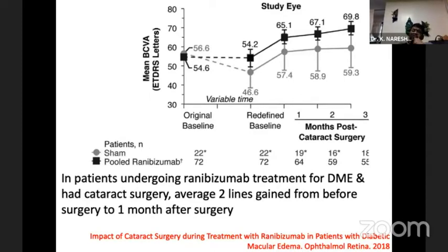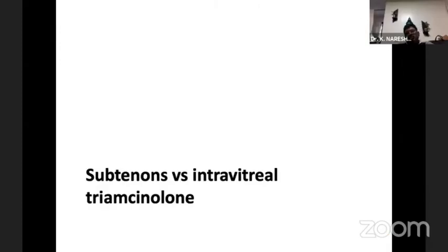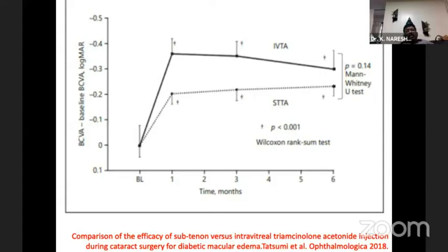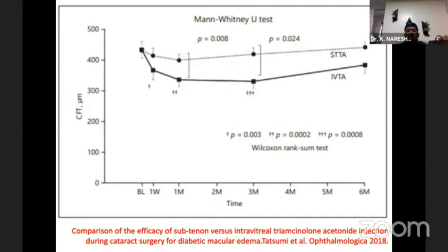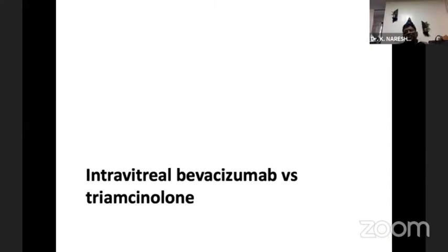In patients undergoing Ranibizumab treatment for DME who had cataract surgery, they usually gain two lines from the pre-op status at the end of one month. There is a trial on sub-Tenon versus intravitreal, but intravitreal is the preferred route. Comparing BCVA and central macular thickness, there is not much difference between agents, but IVTA is usually preferred, though with a chance of raised intraocular pressure. Either Bevacizumab or Triamcinolone can be used.